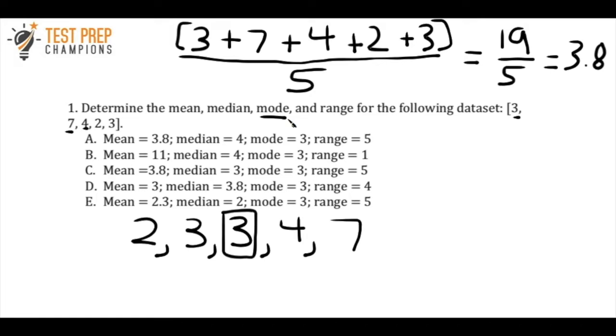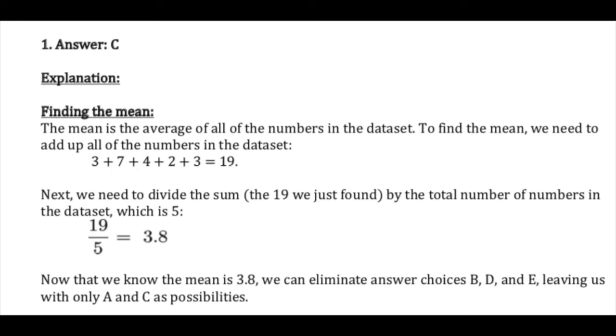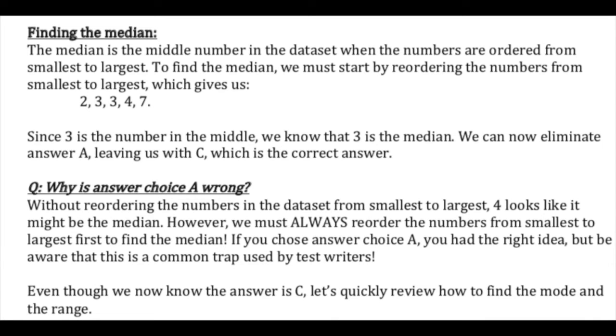To find the mode, the mode is just the most occurring number in your data set. You want to look at the data set again. We see that we have two threes. So therefore three occurs most, three is our mode. Now the range is probably the simplest one to calculate. For the range, all you're going to do is take the biggest number in the data set, and the biggest number here is seven, and you're going to take the smallest number, which is two, and you just subtract them. Seven minus two gives us five. And so the correct answer here is C. Now if you want to look at the written answer, you can pause the video and take your time.